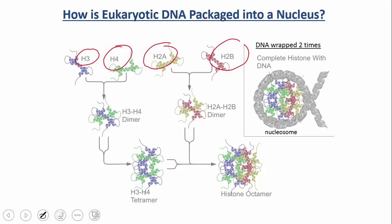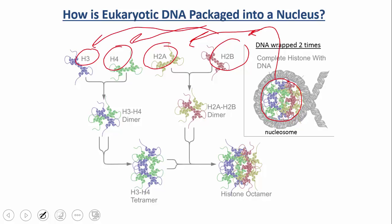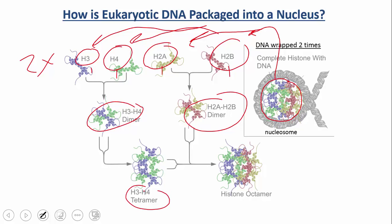Within the nucleosome core sphere, you have those four histones, with two of each — so two H3s, two H4s, two H2As, and two H2Bs. H3 and H4 come together to form a dimer, and H2A and H2B form a dimer. The two dimers of each form tetramers, and ultimately they come together to give you a histone octamer — where you get eight proteins total. 'Octo' in Greek means eight.